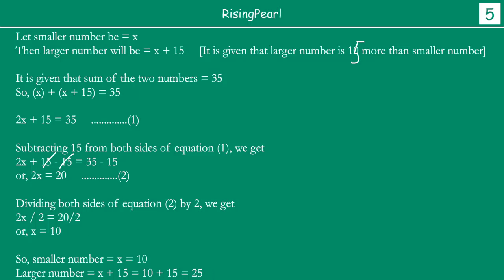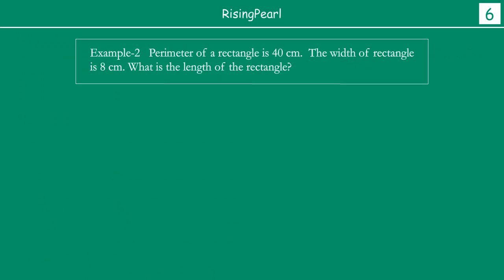Let us look through some of the other examples. We have discussed in presentation 1, webisode 1. Our second example was: the perimeter of a rectangle is 40 centimeters.